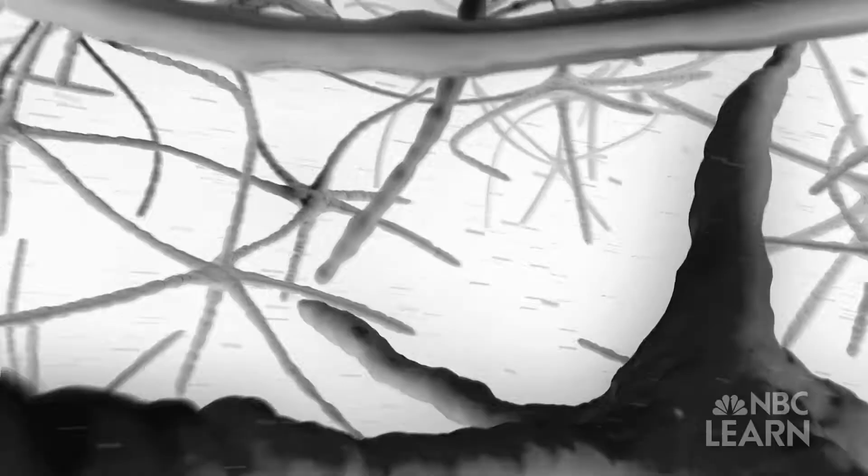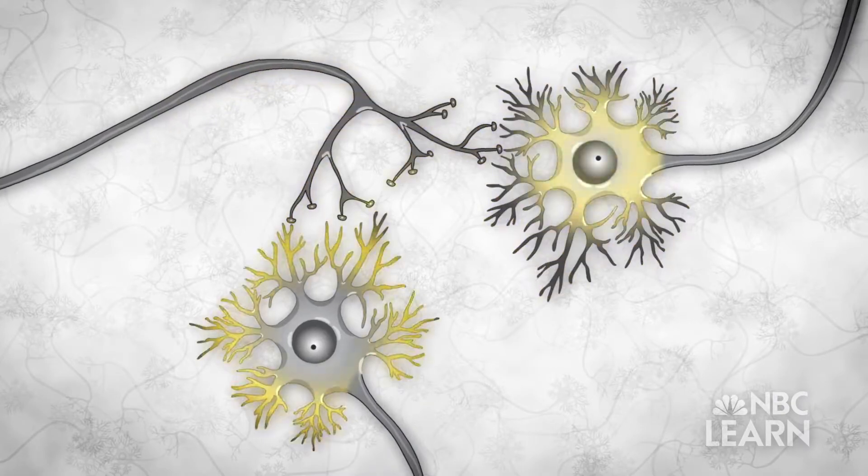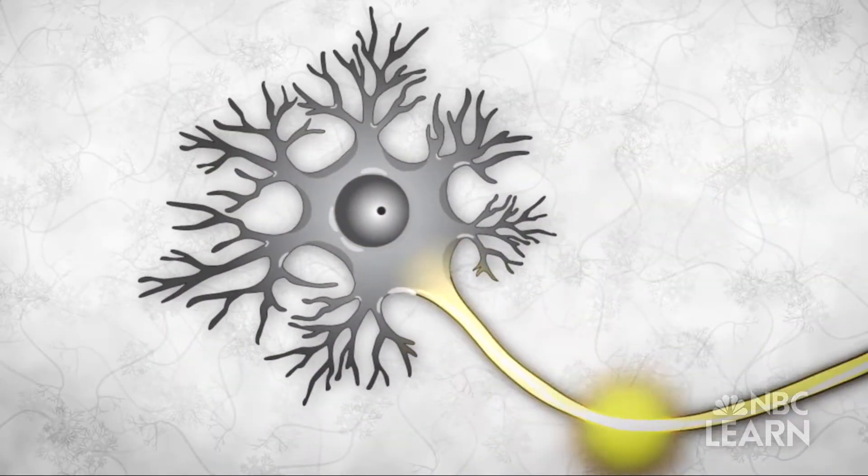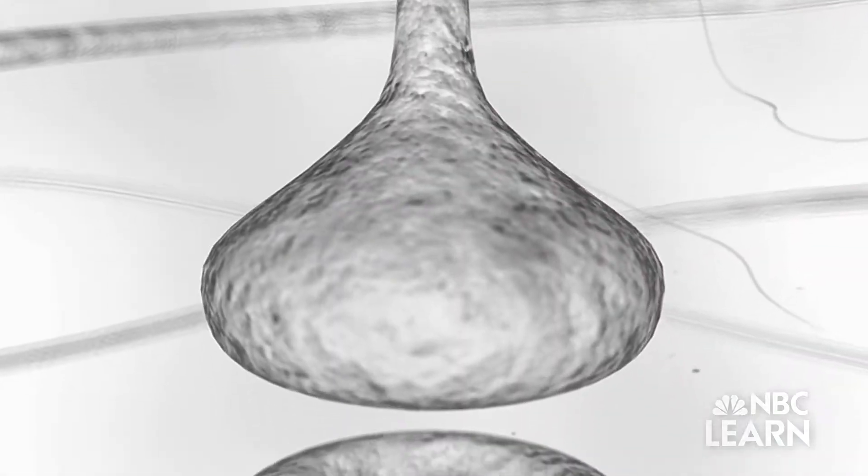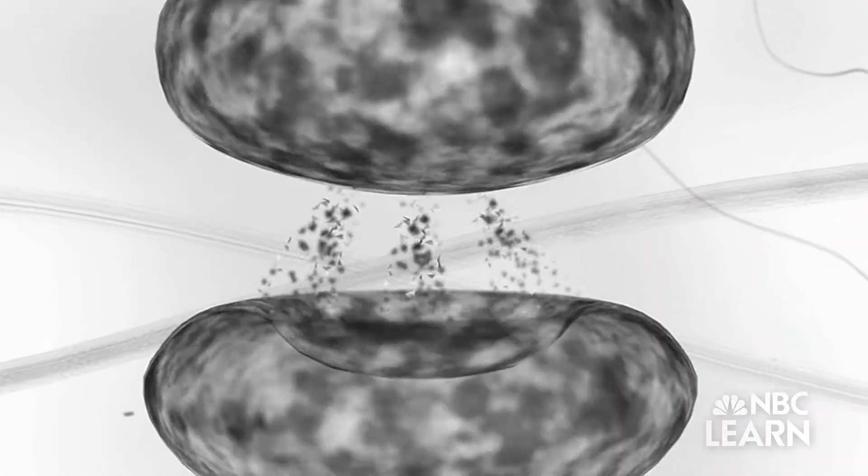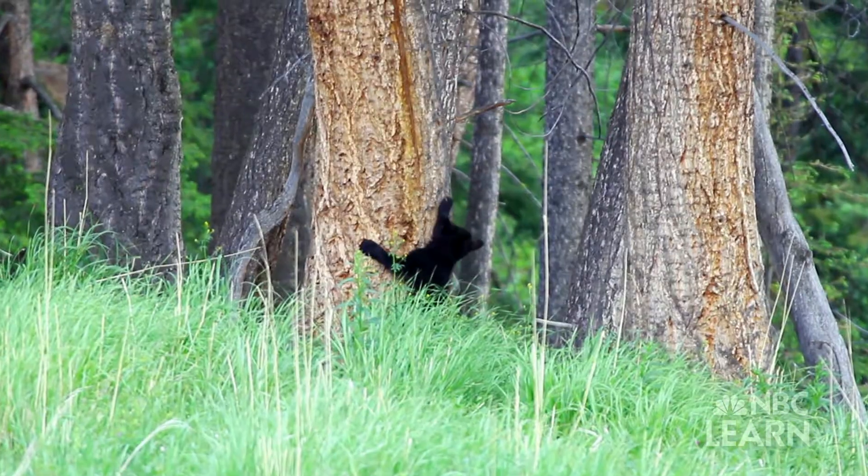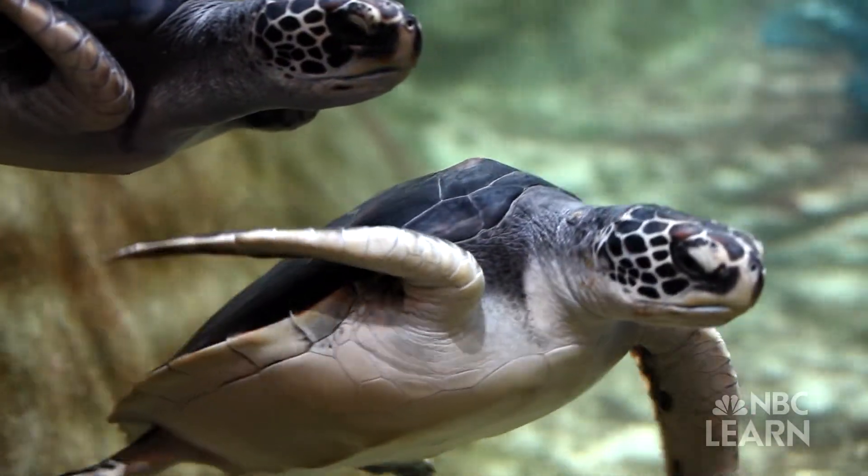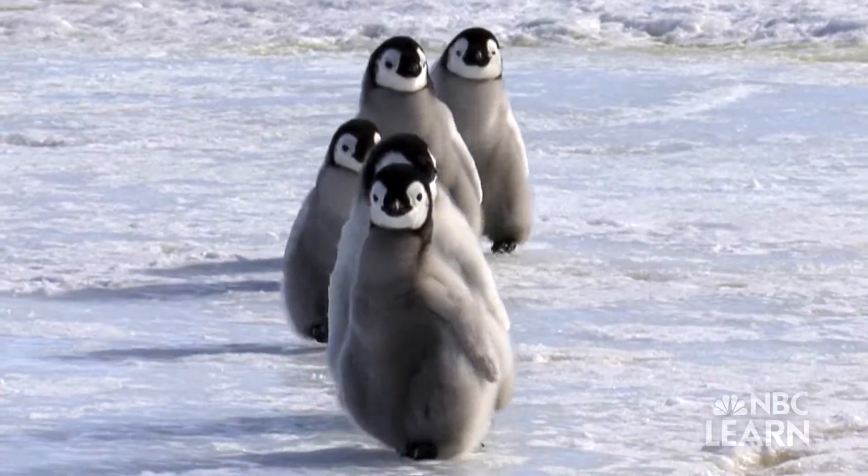Neural circuits are made up of networks of cells called neurons that generate electrical and chemical signals in order to communicate with one another. Each circuit is responsible for a different action or behavior. These circuits are sculpted by how the animals interact with their surrounding environments, starting at the earliest stages of life.